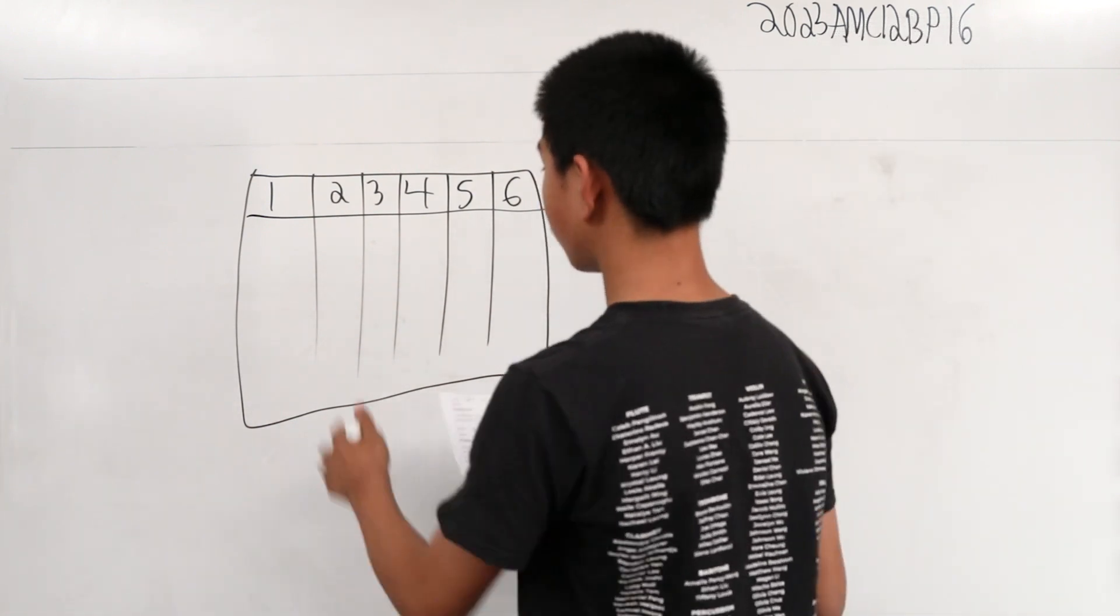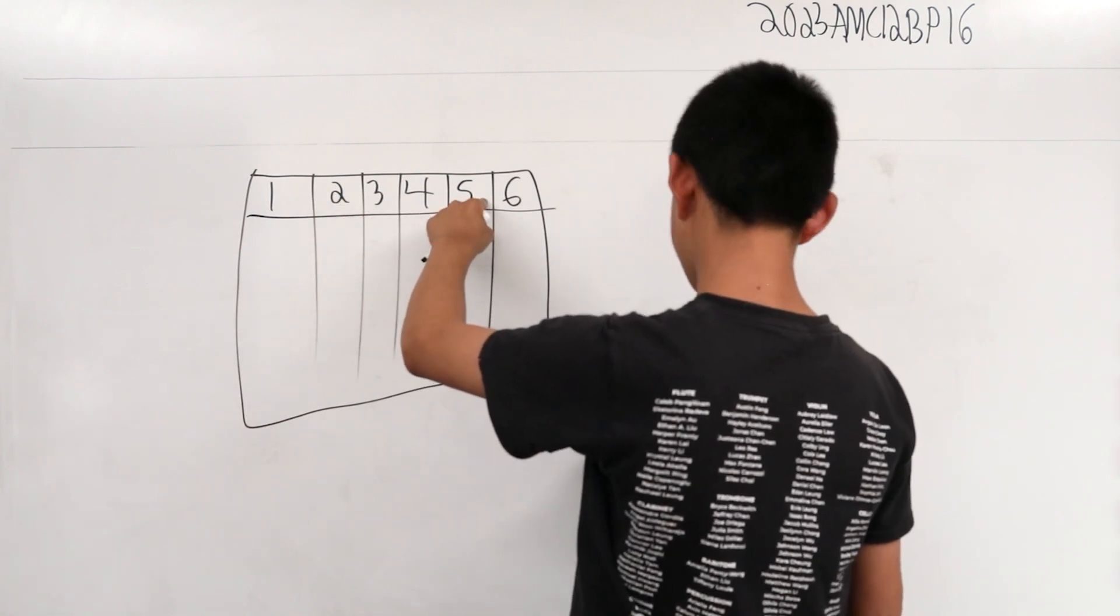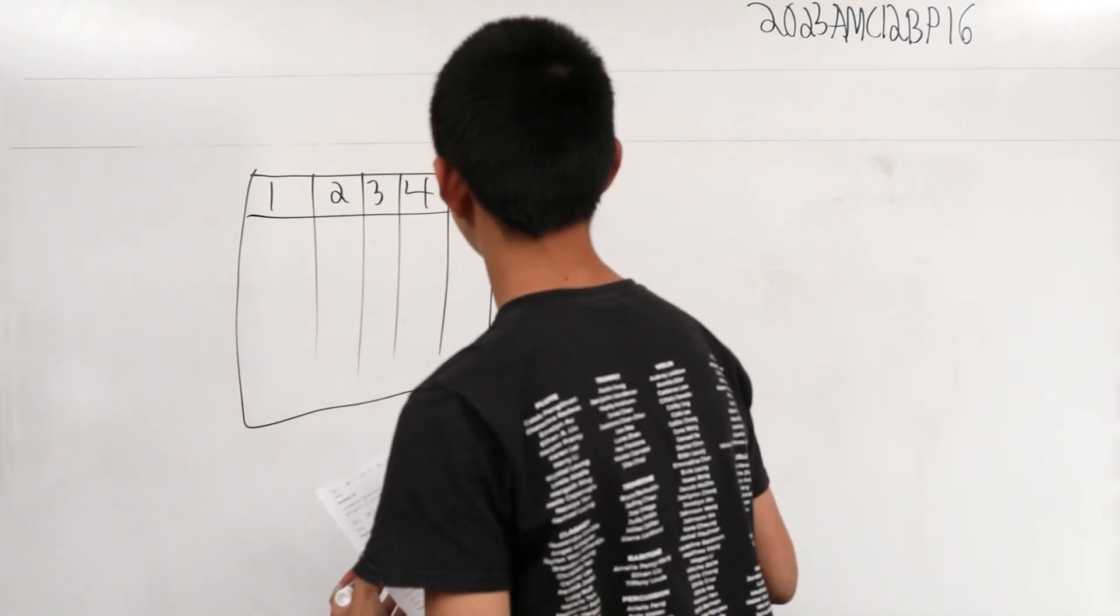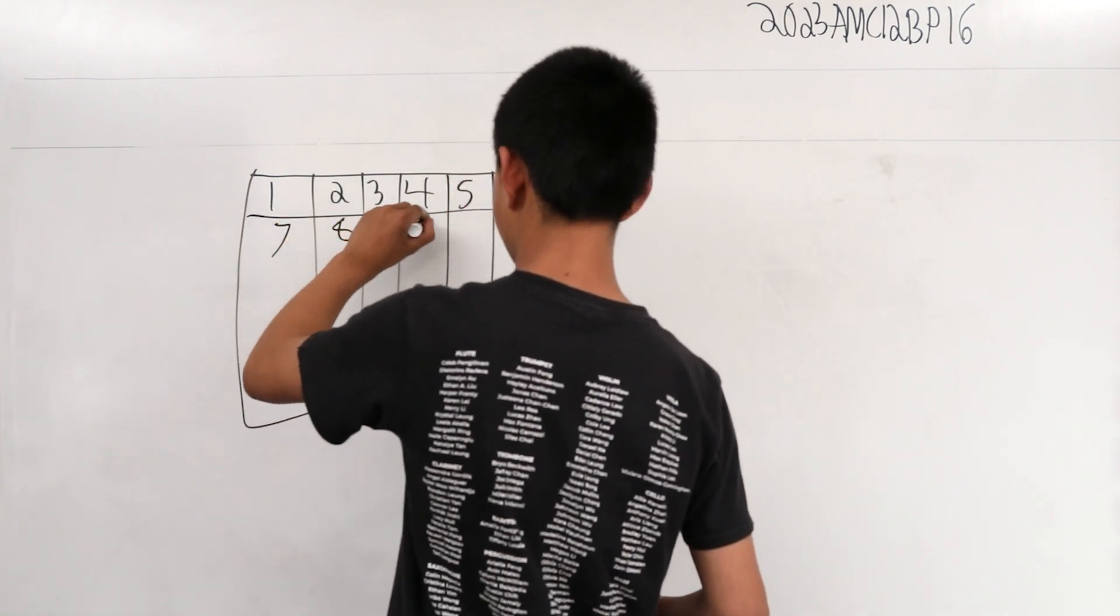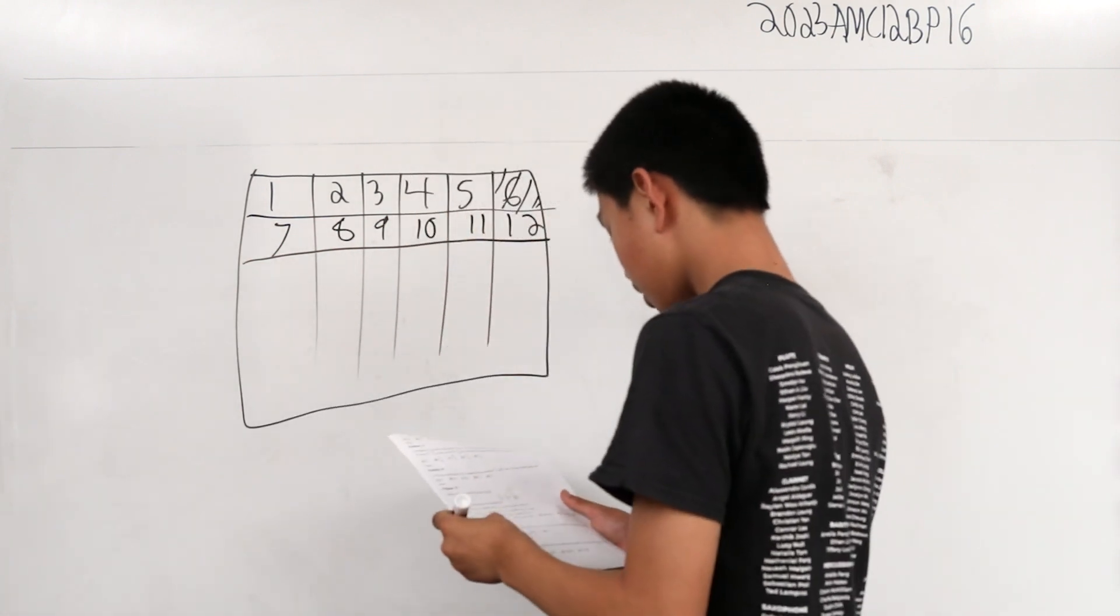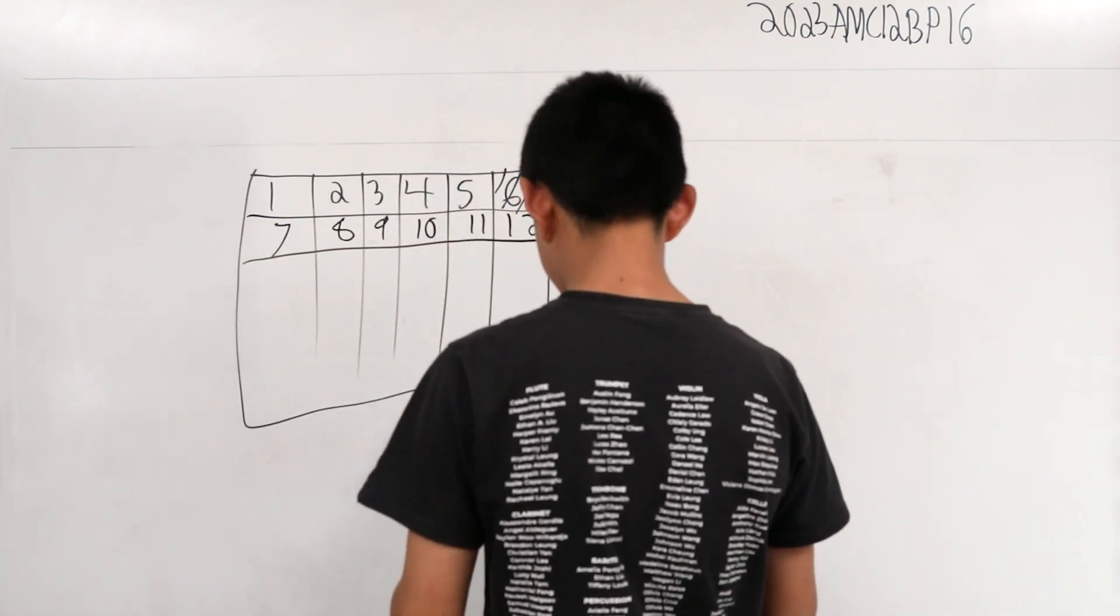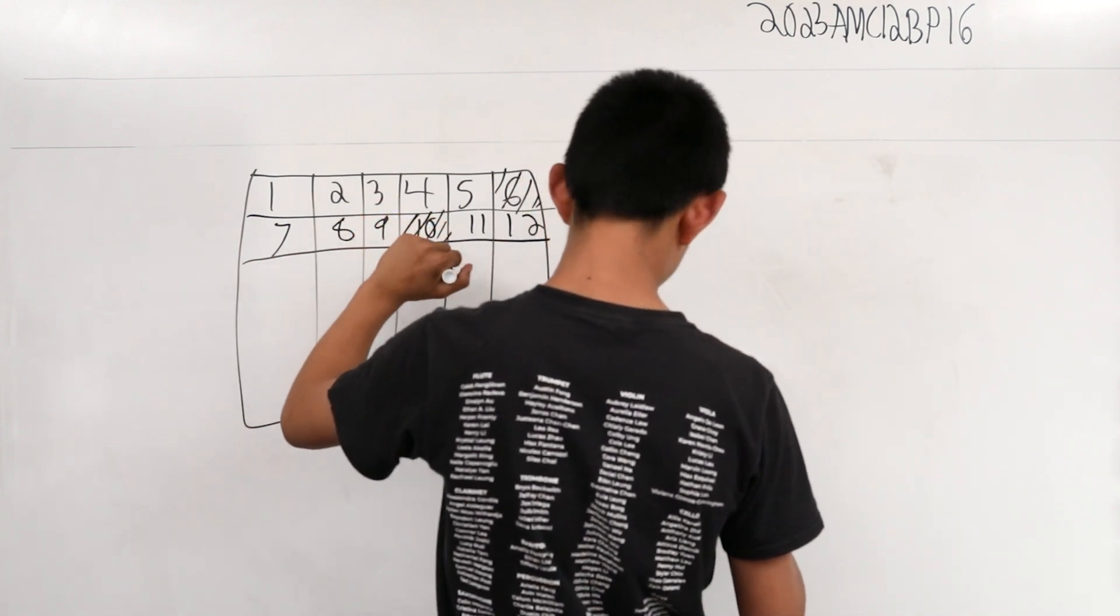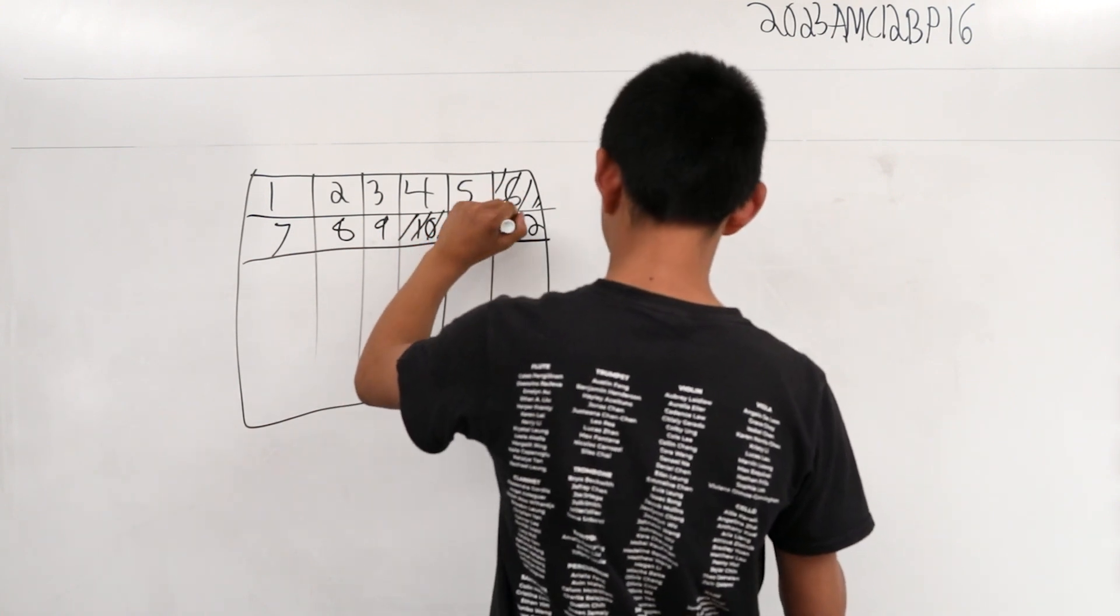1 works, 2 works, 3 works, 4 works, 5 works. 6 does not work because you can just have it with one 6-coin. Let's try 7, 8, 9, 10, 11, and 12. 7 works, 8 works, 9 works, 10 does not work. 11 works, and 12 does not.